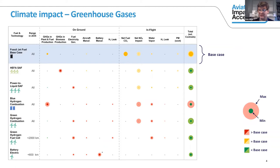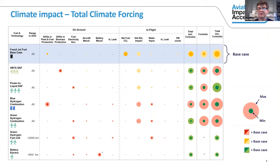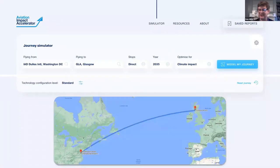If I add the contrail effect — the climate forcing effect of contrails — you see much larger uncertainty entering the problem. The total climate forcing, taking contrails into consideration, shows incredibly high uncertainty across the different solutions, with great opportunity but also great uncertainty at the moment.